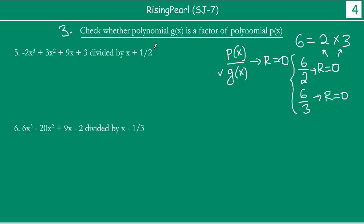So what this type of question means is that we have to find the remainder when P(x) is divided by G(x). In this case, our polynomial is divided by a given divisor. Now notice: here you don't have an integer — instead you have a real number like a fraction.